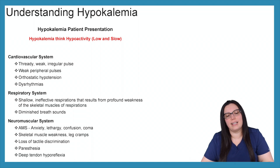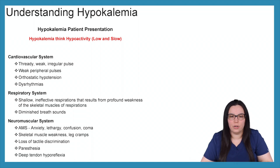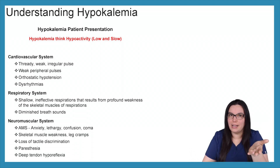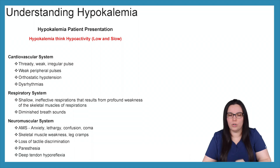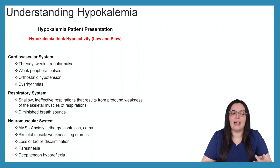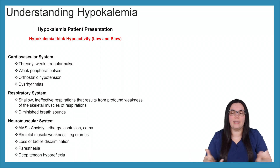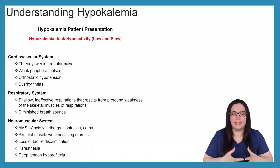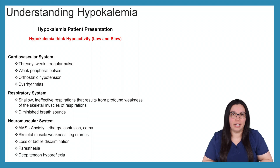When it comes to our cardiovascular system, you're going to see thready, weak, irregular pulses, weak peripheral pulses, orthostatic hypotension, and dysrhythmias. Anytime we have any kind of electrolyte imbalance, you're most likely going to see some kind of dysrhythmia — that's what will be on your NCLEX. For the respiratory system, we're going to have shallow, ineffective respirations that result from profound weakness of skeletal muscles — low and slow. Low potassium decreases excitability of skeletal muscles, leading to weakness in respirations and diminished breath sounds.